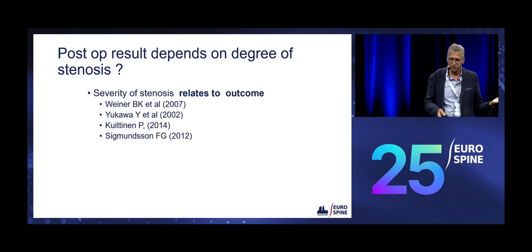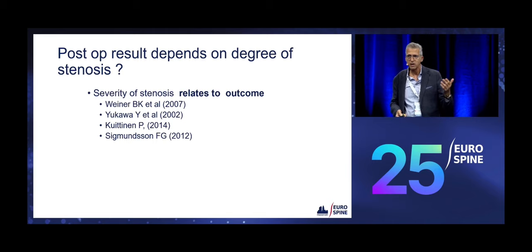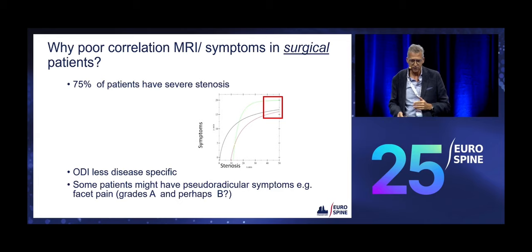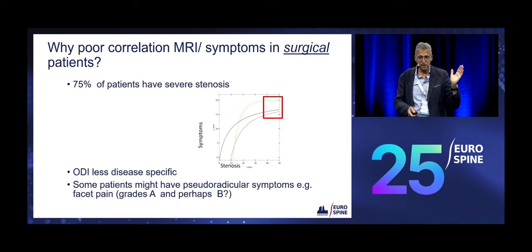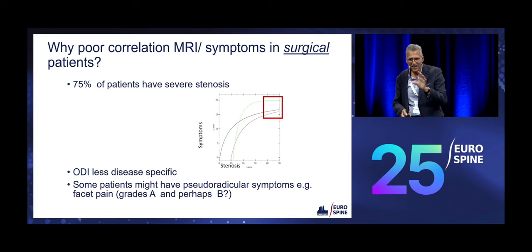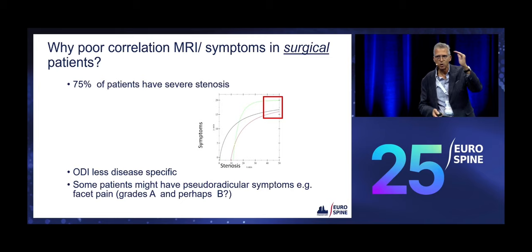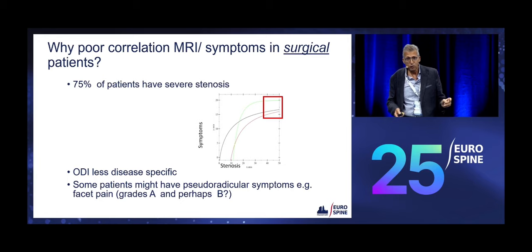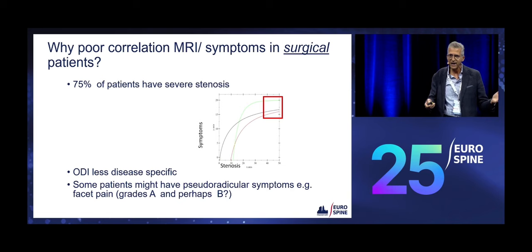Do post-op results depend on the degree of stenosis? Prior to our paper, several studies did show that outcome depends on the degree of stenosis measured in different ways. Why is there a poor correlation between pre-op symptoms and surgical patients? We could imagine that you cannot get worse than worse if you have a lot of pain — we're looking at patients on the right upper side of the graph, like an asymptote. Also, ODI is less disease-specific. And some patients with Grade A and B stenosis may have pseudo-radicular symptoms not related to nerve entrapment.